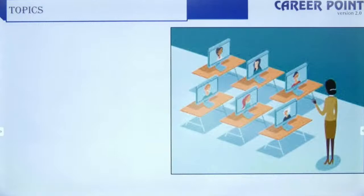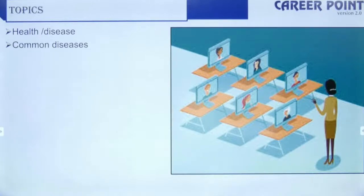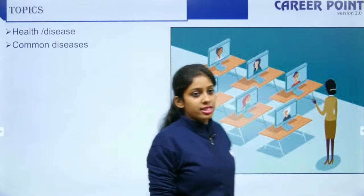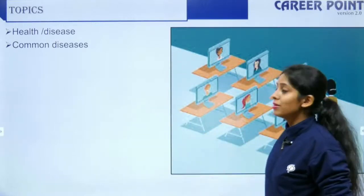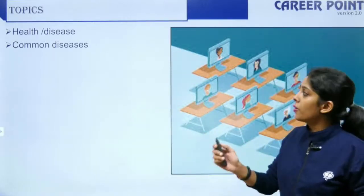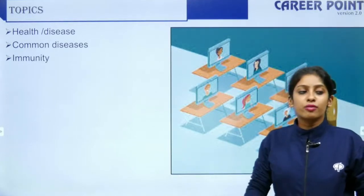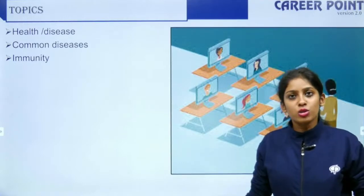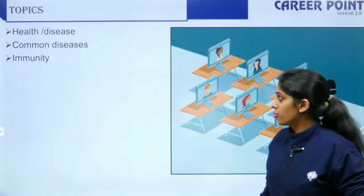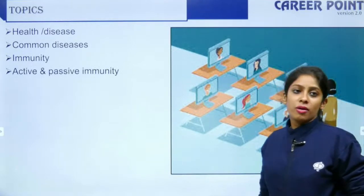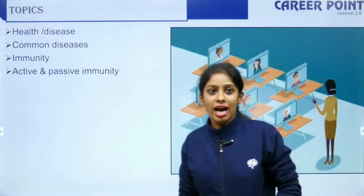We defined health and disease, and discussed common diseases: bacterial, viral, protozoan, helminthic diseases, and ringworm caused by fungi. Then we started defining immunity and spoke about the two types — innate and adaptive immunity. Today we'll talk about active and passive immunity.